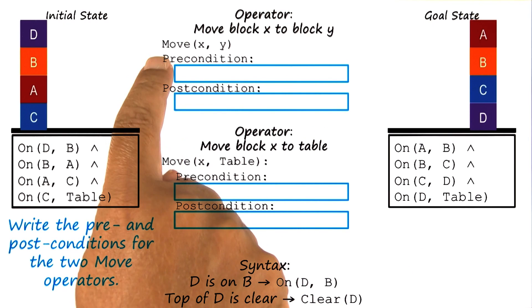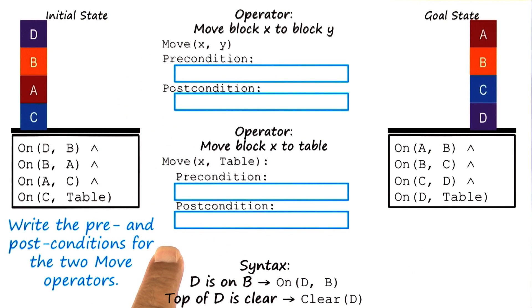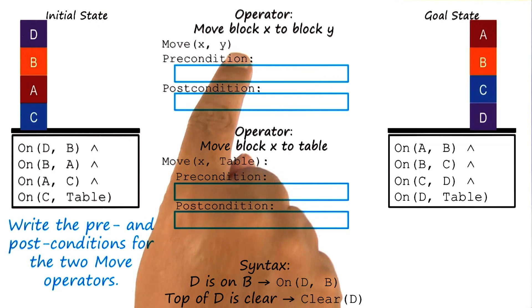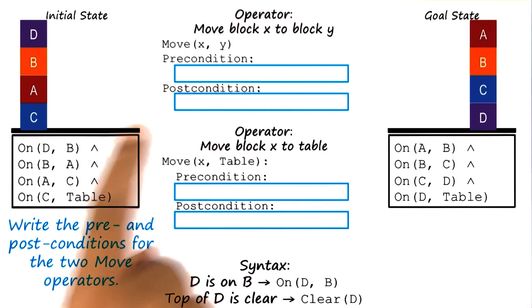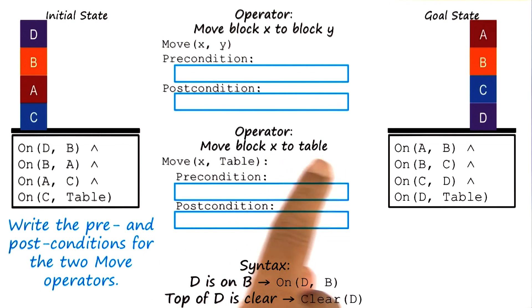To do this, let us start writing the operators that are available in this particular world. There are really two operators. I can either move block X to block Y, which is the first operator here, or I can move block X to the table.